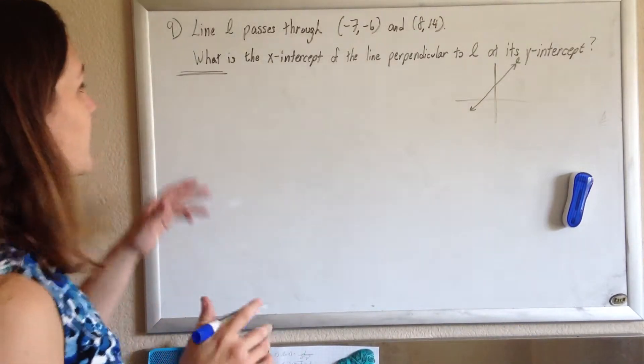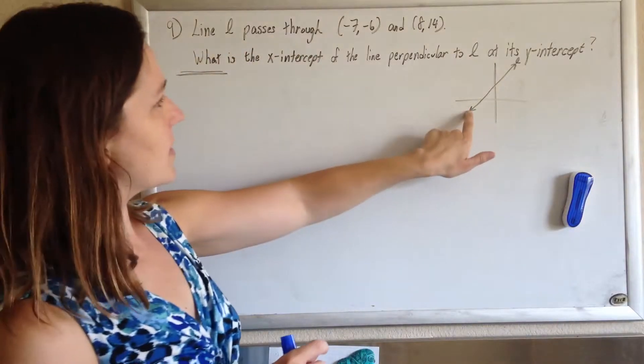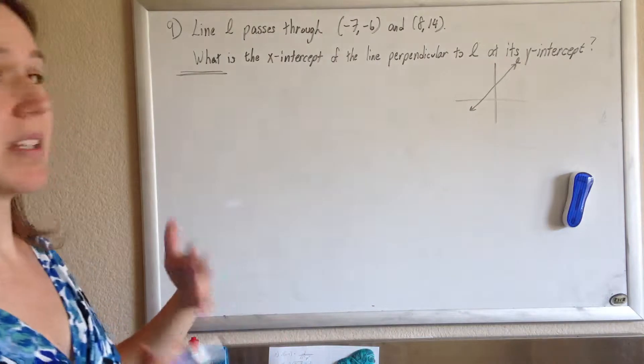Alright, lots of moving parts in this one. We got it. Line L passes through (-7, -6) and (8, 14). So I just drew a rough little sketch so we can see it.